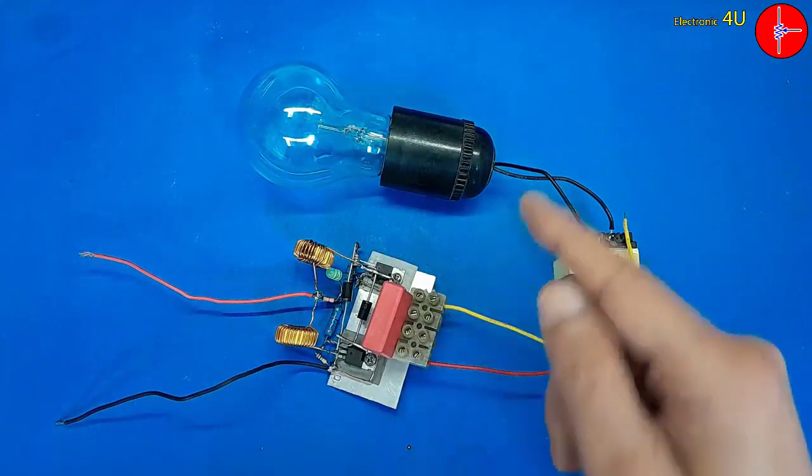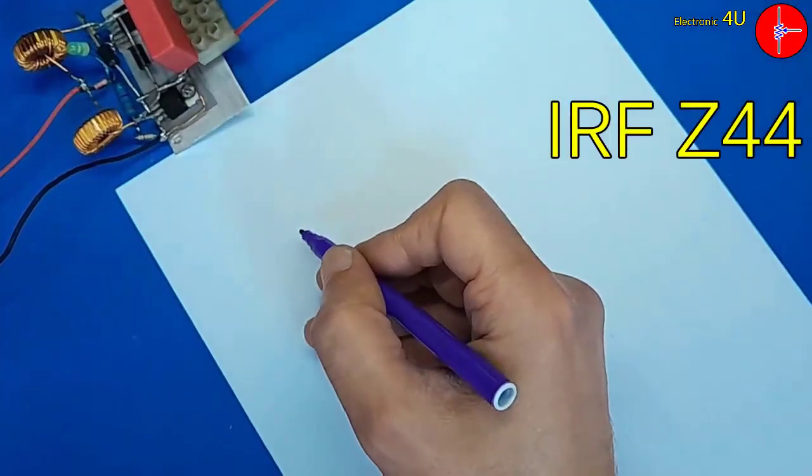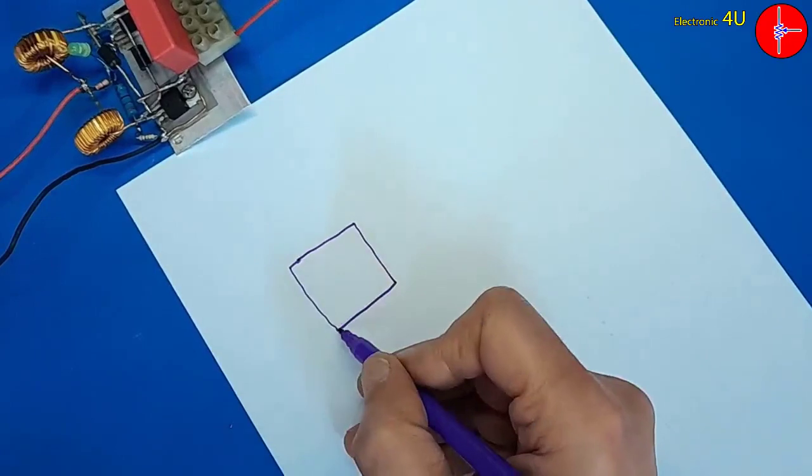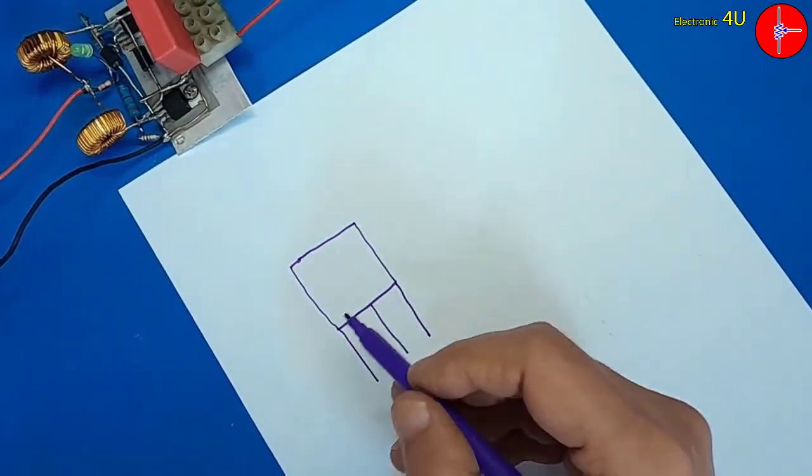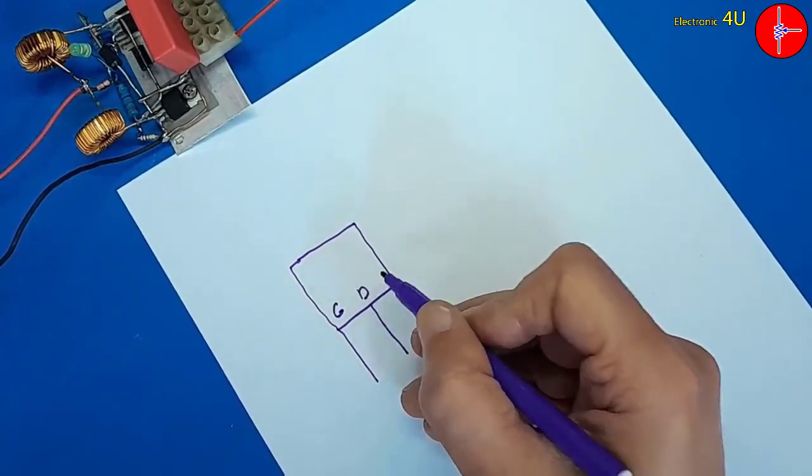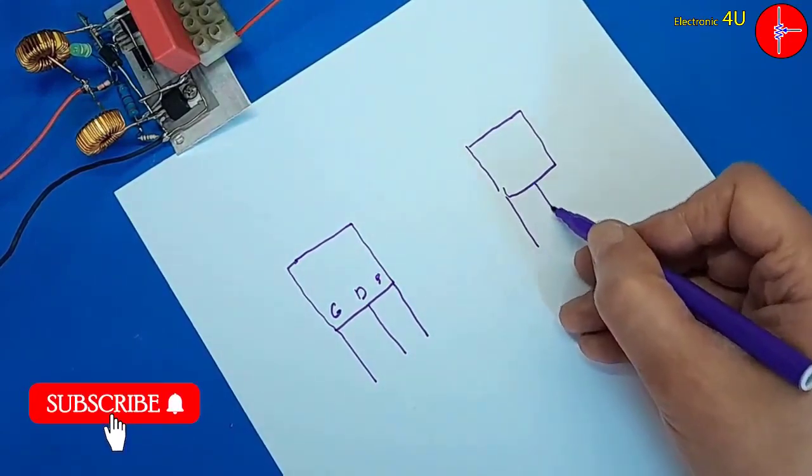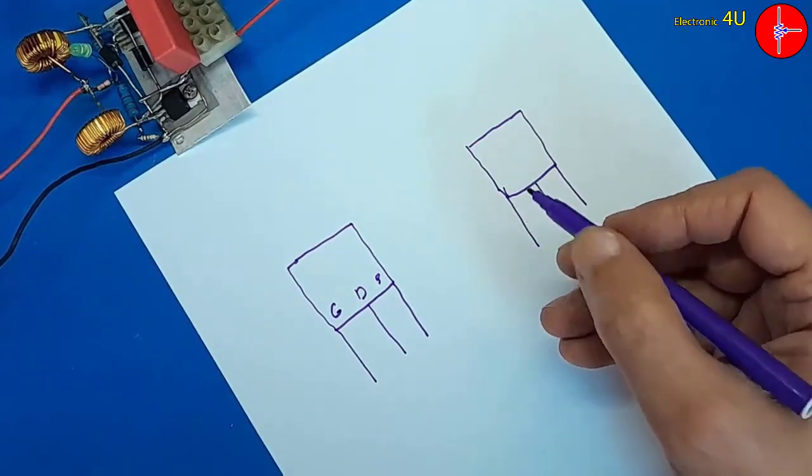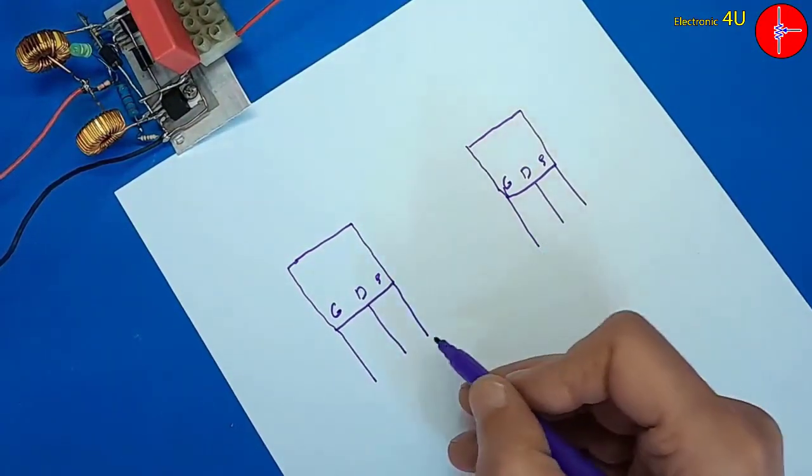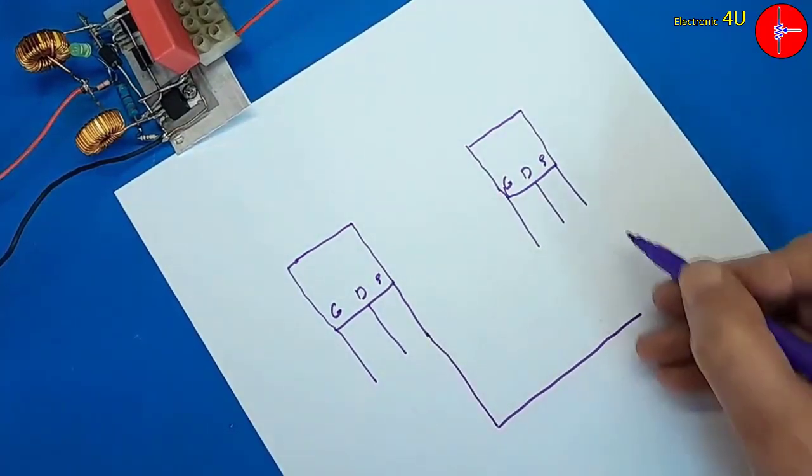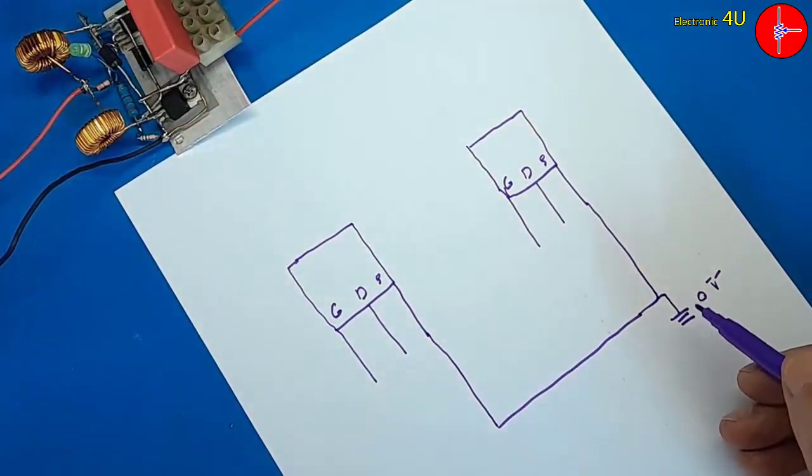Well, now I will draw the circuit on paper for you. In this circuit, we have used two MOSFET Z44. I will draw the appearance of the part to make it easier to understand. This is the first MOSFET, gate, drain, source. The source pins are connected to the input 0V. Here is 0V. It is the same negative circuit.